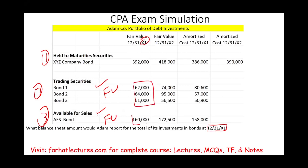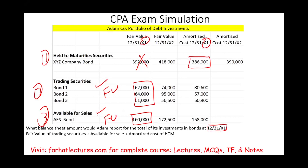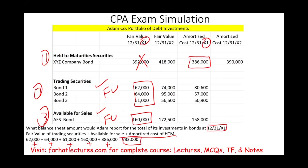The fair value of X1 covers bond 1, bond 2, bond 3, and the available-for-sale bond — we report them at fair value. For held-to-maturity, we report the value at amortized cost. We don't use fair value for held-to-maturity. What's reported on the balance sheet is the fair value of trading securities and fair value of available-for-sale, plus the amortized cost of held-to-maturity. Adding up these figures: 62,000 plus 64,000 plus 61,000 plus 160,000 plus 386,000, the investment account as of December 31st X1 should show 733,000.